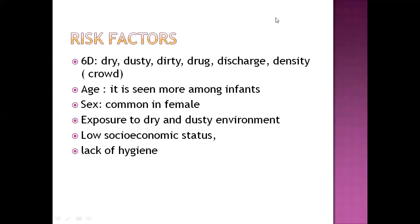The sixth D is density — trachoma can occur in areas with a large crowd or large density of people. Another risk factor is age. Trachoma is seen more among infants and children. It is more common in females. It is common in places with exposure to dry and dusty environments, and mostly seen in people with low socioeconomic status and lack of hygiene.